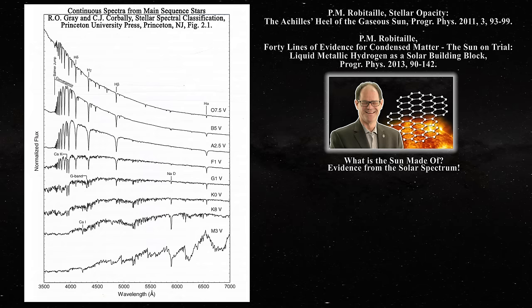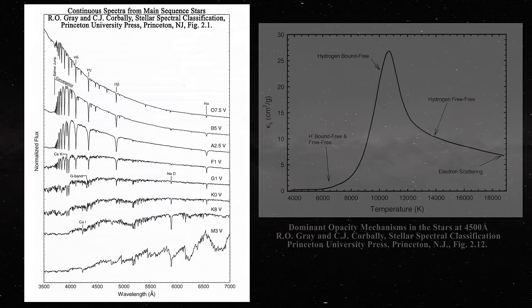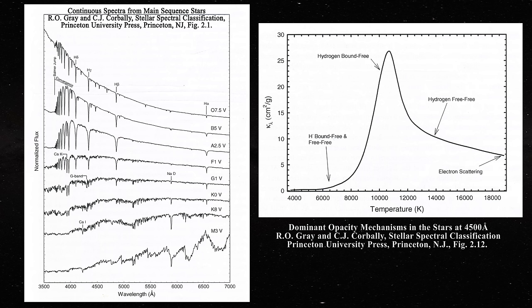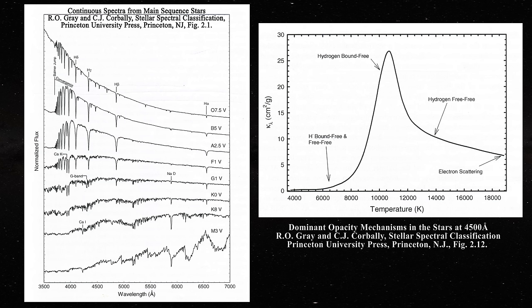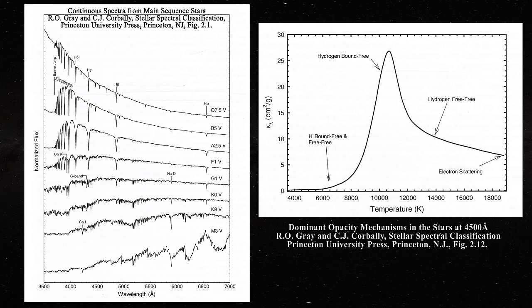Yet if the standard model uses the negative hydrogen ion to account for the bulk of the photospheric spectrum, then how is the continuous spectrum accounted for for other stars? The answer can be found by examining figure 2.12 in Gray and Corvalli. In this figure, the opacity at 4500 angstroms is plotted against temperature. The major source of opacity is provided for different temperatures. For instance, for a star like the Sun with an apparent temperature near 6000 Kelvin, the major contributor to opacity is said to be the negative hydrogen ion bound-free interactions, along with free-free processes. Now look at what happens for other stars. The dominant opacity mechanism for a star with an apparent temperature between 9000 and 12000 Kelvin is hypothesized to be the hydrogen bound-free reaction.